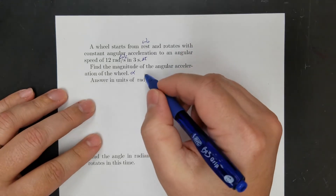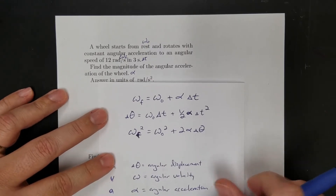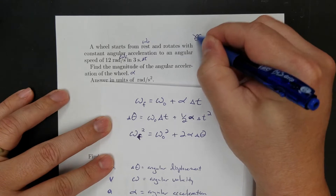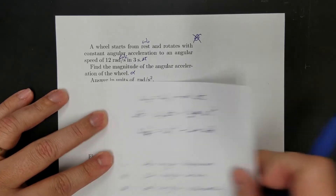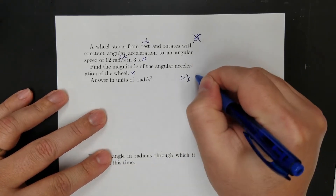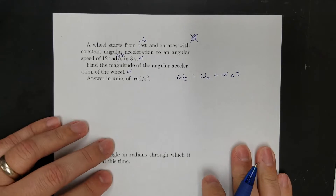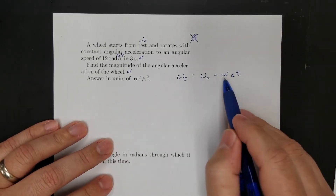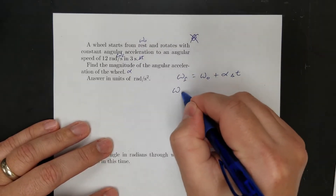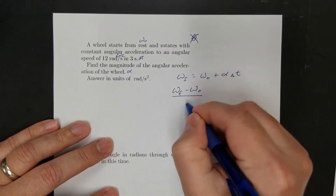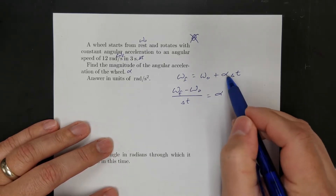I need to get the angular acceleration, so I need an equation that has everything except theta — I don't have theta. So I can use the first one: final angular velocity equals initial angular velocity plus angular acceleration times time. I can solve for angular acceleration — do the algebra first, don't plug numbers in. Subtract omega naught over and then divide by delta T to get angular acceleration.